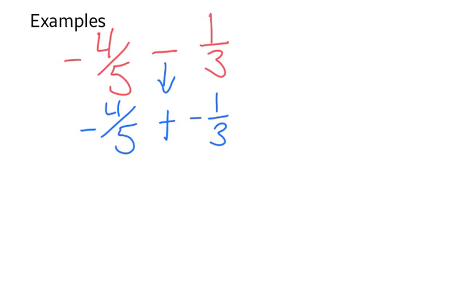From here I see that I have same signs. Both are negative. So what I'm going to be doing from this step is doing same sign sum. 4 fifths plus 1 third.